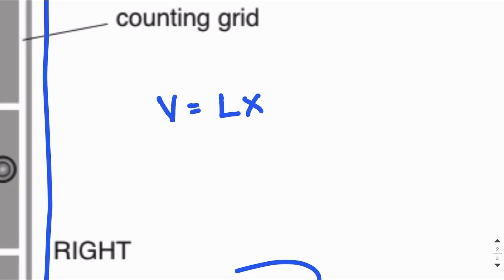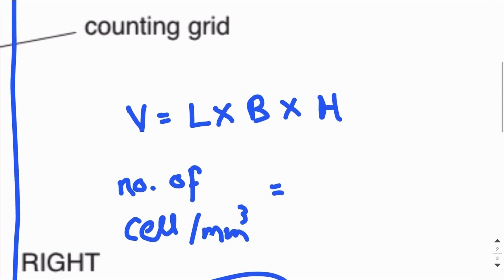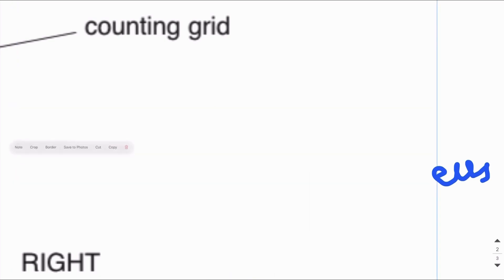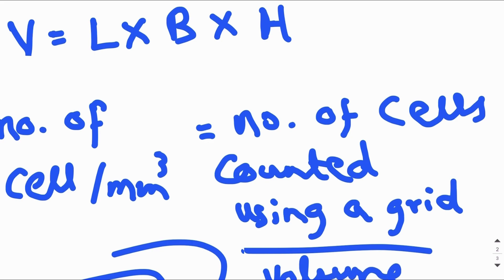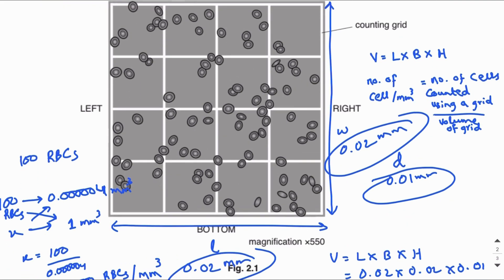The formulae we use are: Volume = length × breadth × height (this gives the volume of the grid), and Number of cells per mm³ = number of cells counted in the grid ÷ volume of the grid. These are the formulae you use to find the number of cells per unit volume, or per millimeter cube.